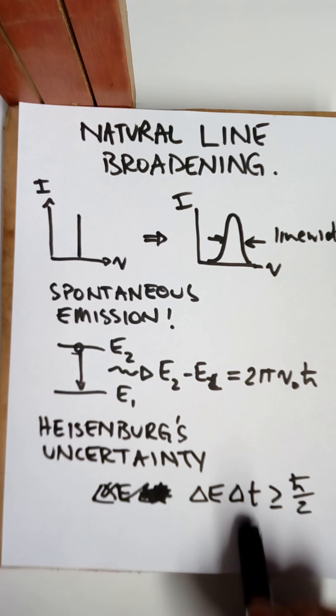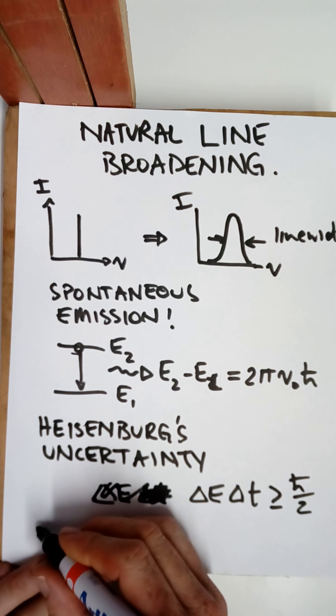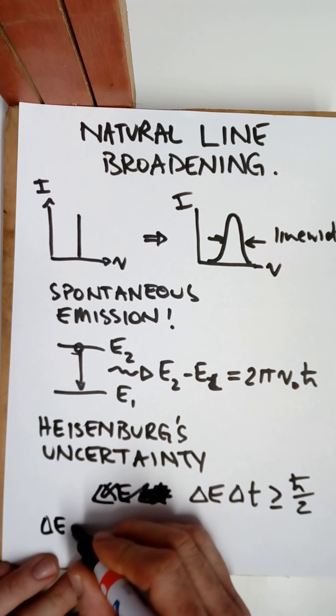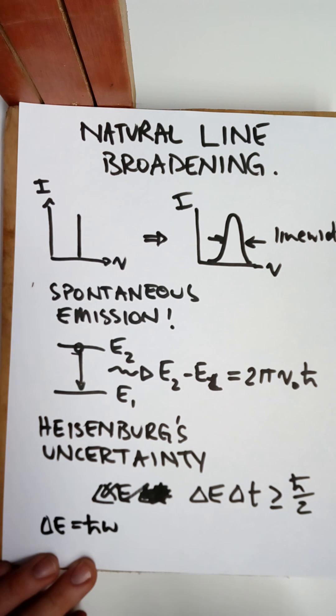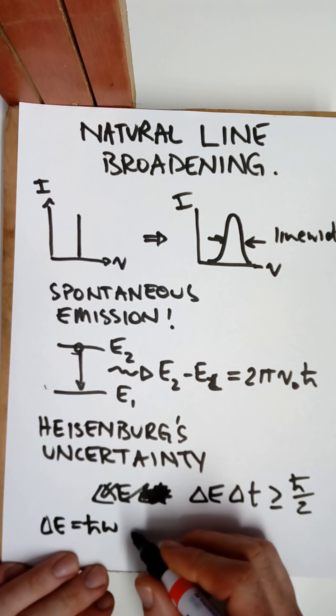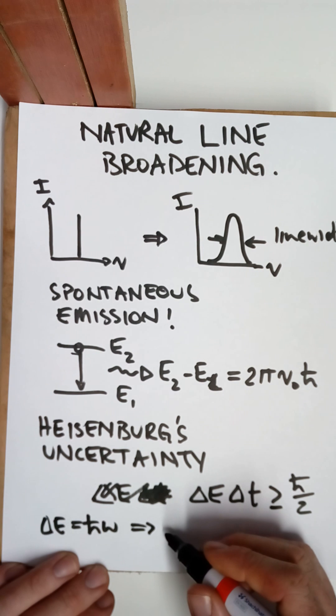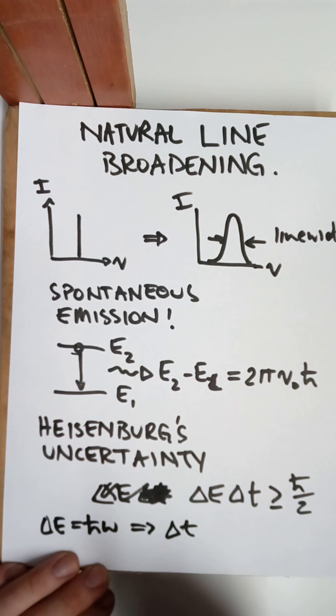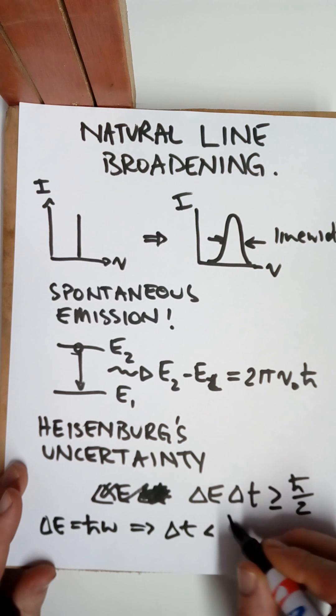But what this essentially means is that if we think about it, if we have a photon that has some energy, then using Heisenberg's uncertainty principle, we can get the idea that this photon can exist, or there's some uncertainty in its time, which is related to the photon's frequency.